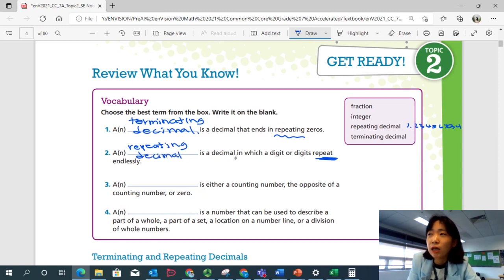Next one. A or N blank is either a counting number, the opposite of a counting number or zero. Is it a fraction or is it an integer? We have two options left. It could be a counting number or the opposite of a counting number. So like negative numbers and positive numbers of a counting number or zero. These are called integers.